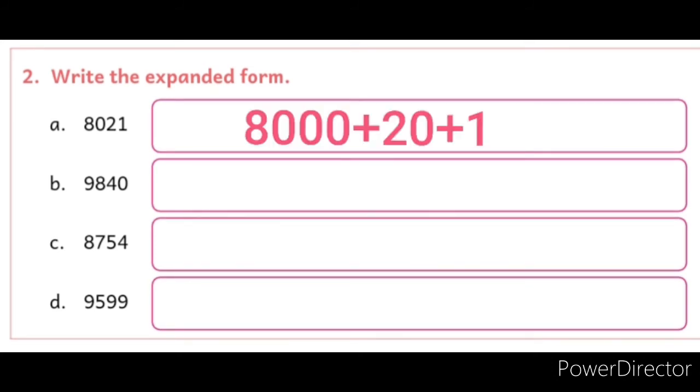Dear Students, to get the Expanded Form of any number, we add the Place Value of each digit. Hence, the Expanded Form of 8021 is 8000 plus 20 plus 1.